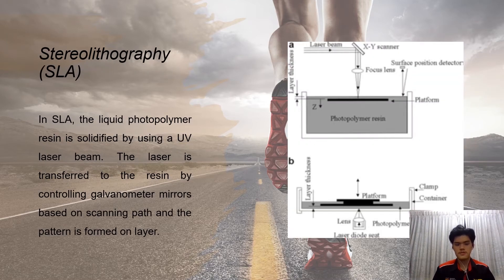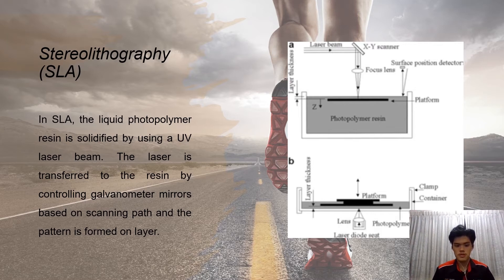For Stereolithography, the type of material used is liquid photopolymer resin. The liquid photopolymer resin is solidified by using a UV laser beam. The laser is transferred to the resin by controlling the galvanometer mirrors based on the scanning path, and specific patterns are formed on the layers.